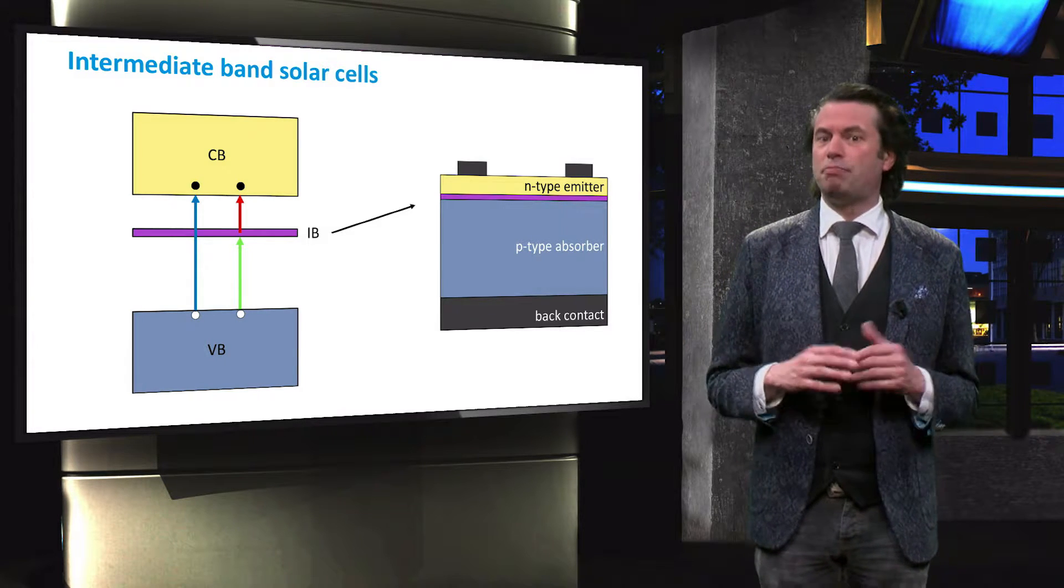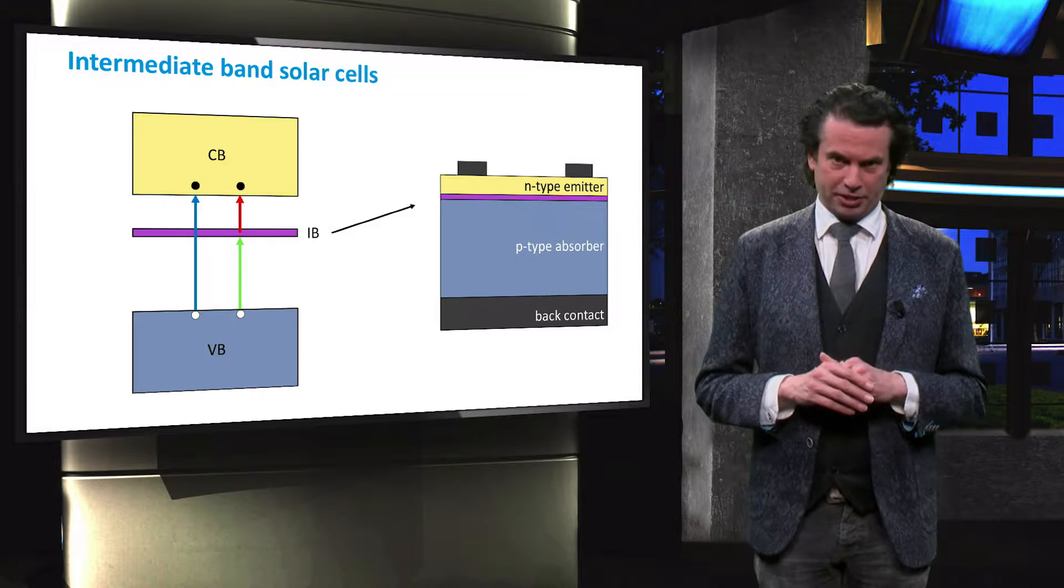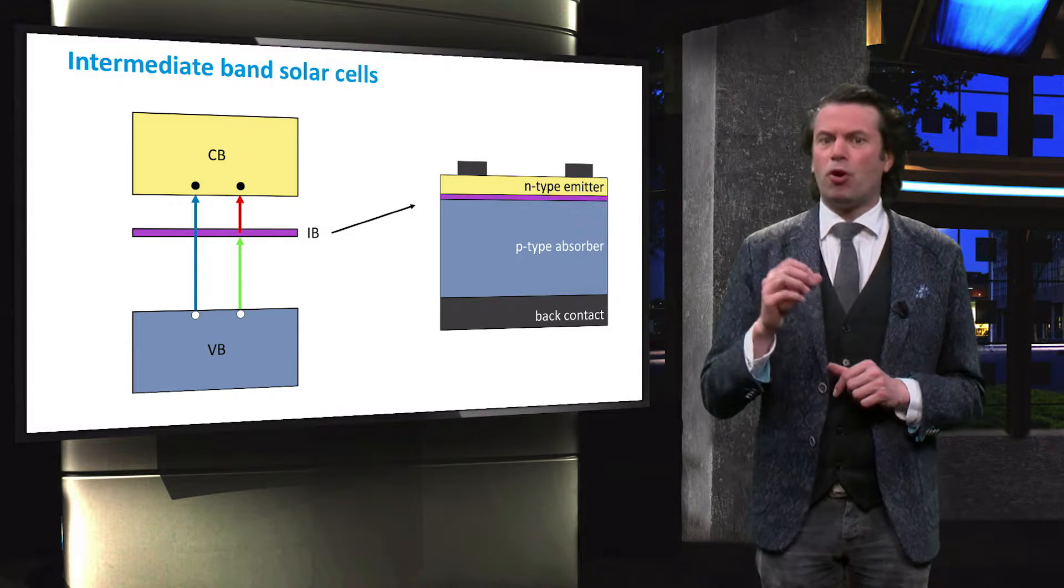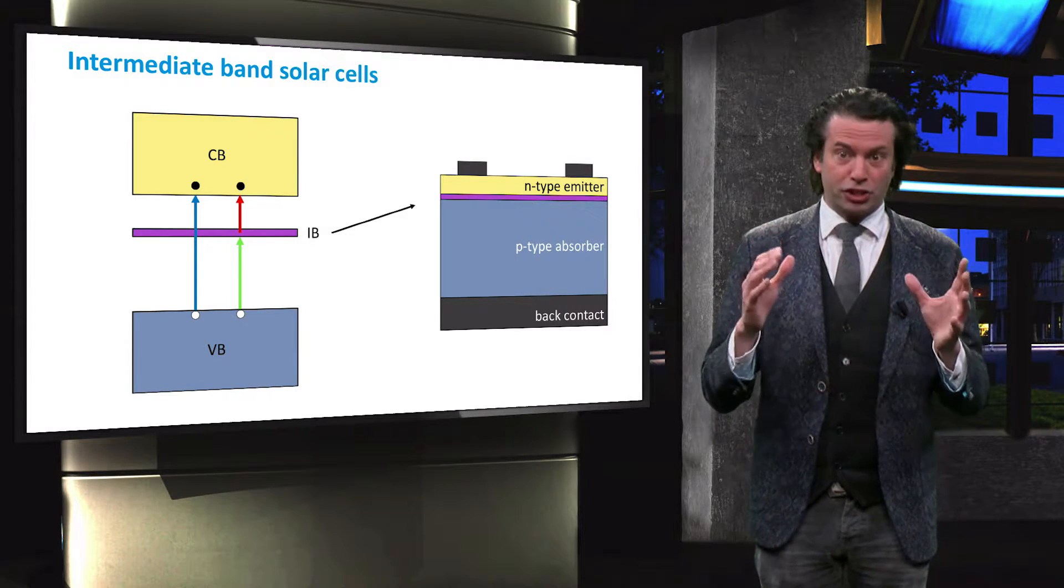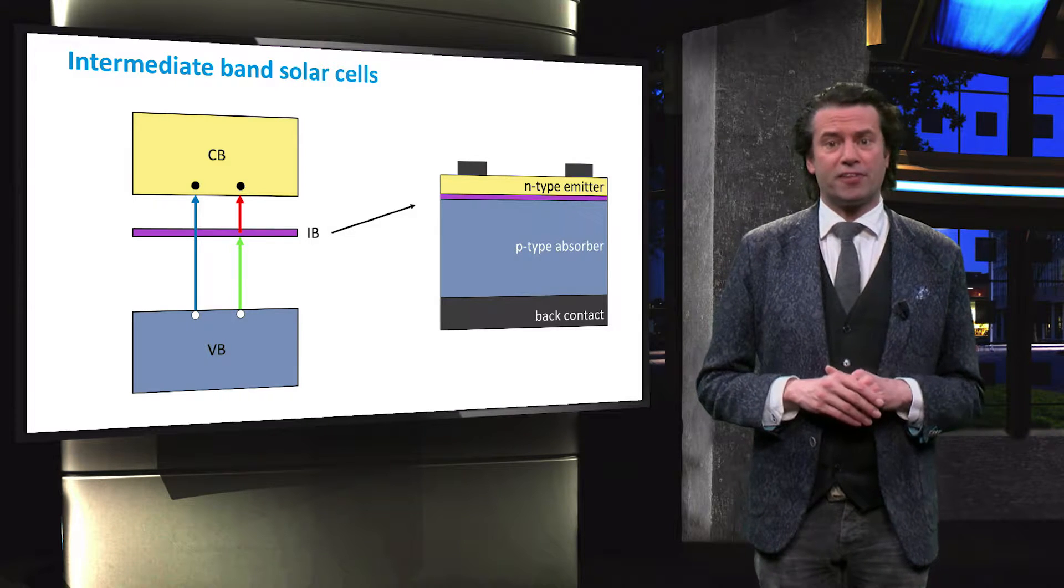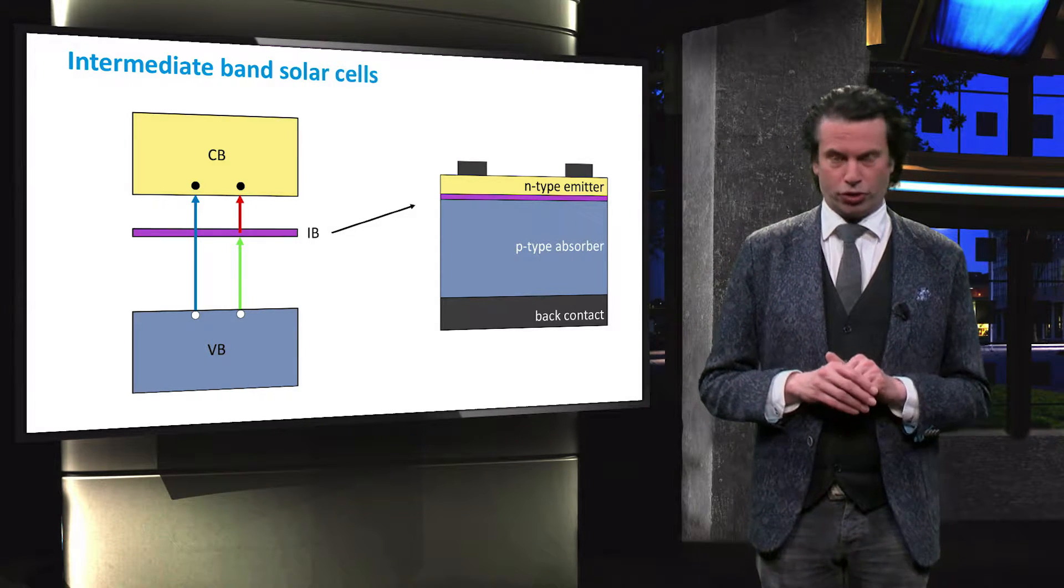Various bulk materials have been studied for realizing the intermediate states. One major problem of these cells is that the voltages are lower than those of the reference cells without an intermediate band structure.